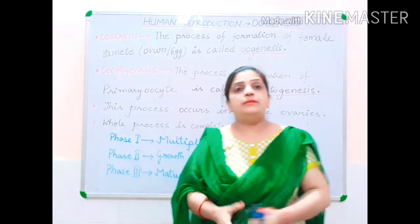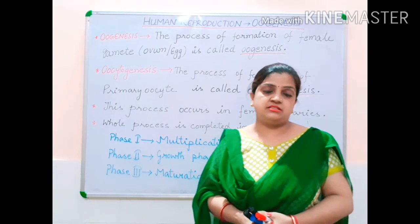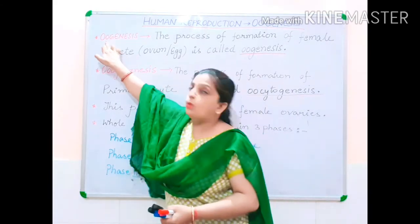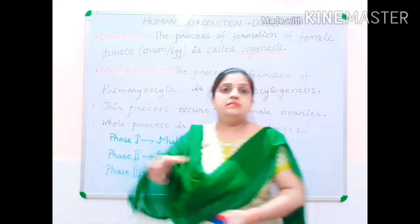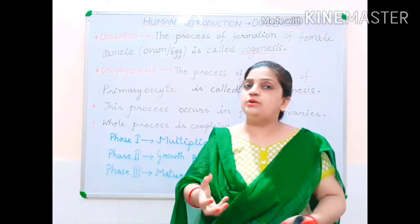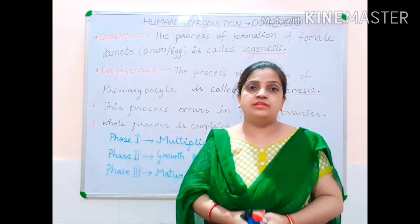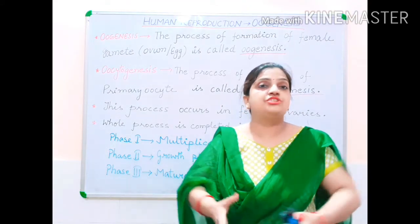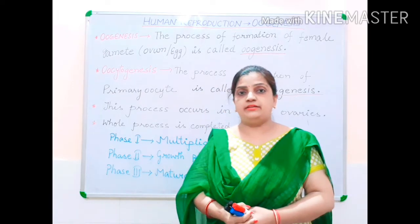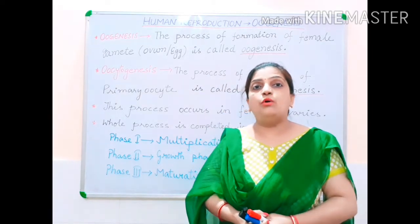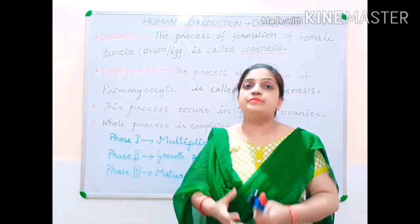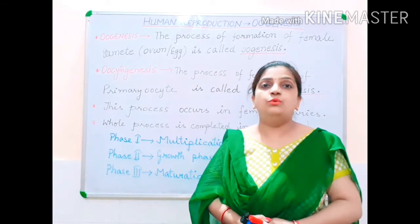The process oogenesis is made up of two terms: 'oo' and 'genesis.' The term 'oo' means egg, and 'genesis' means to produce, synthesize, or generate something. So the process in which eggs are generated — in which the female gamete, the ovum, is produced — is called oogenesis.